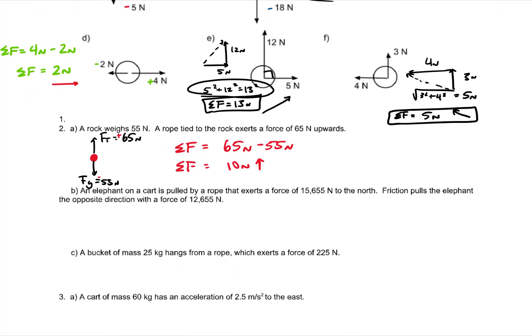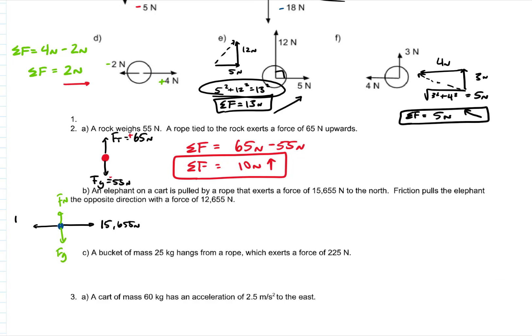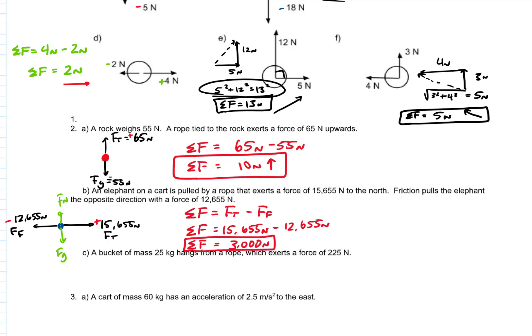For part B, we have an elephant on a cart pulled by a rope. It's pulled 15,655 newtons north, and there's a friction force of 12,655 newtons in the opposite direction. We make the tension positive and friction negative. Net force is 15,655 minus 12,655, which comes out to 3,000 newtons.